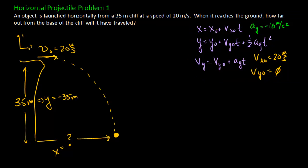For example, if we look at the x equation, I know the initial x position if it starts at zero. I know the initial x velocity. I don't know the time and I don't know the position in the x direction. So I have two unknowns in this equation, so I can't use it yet.